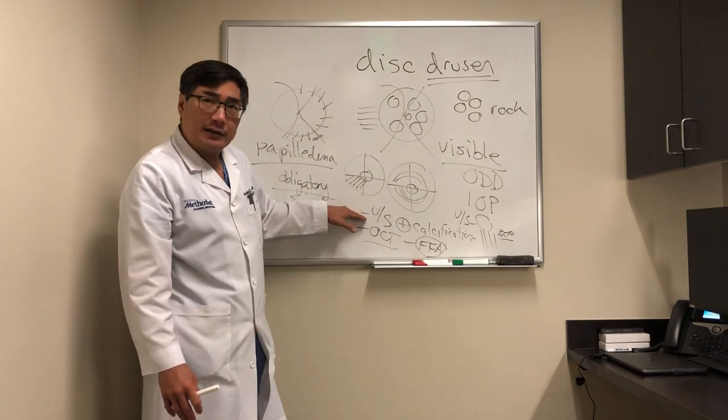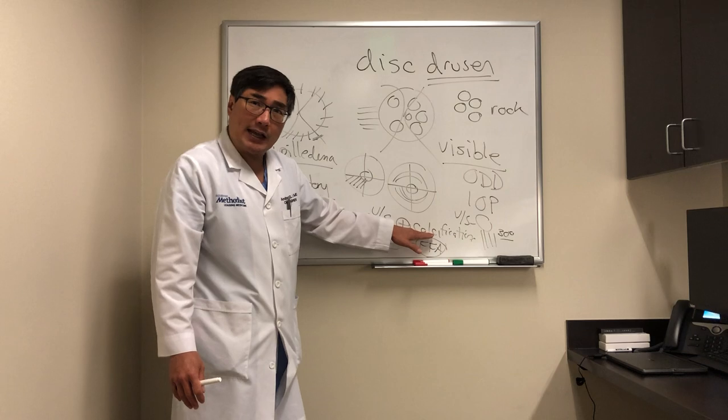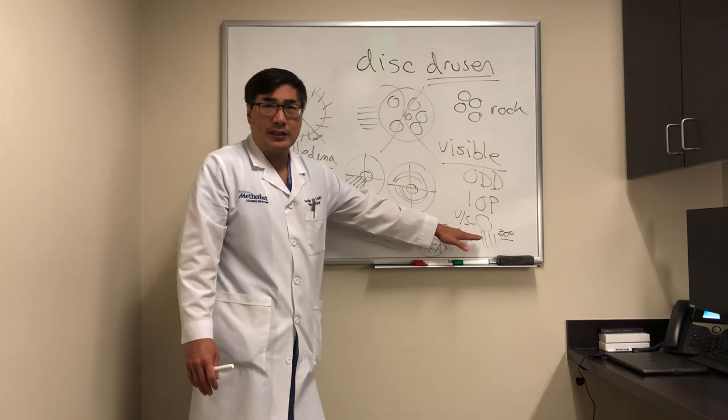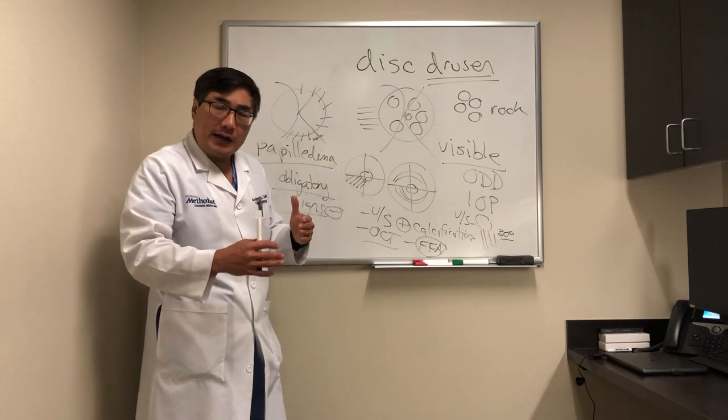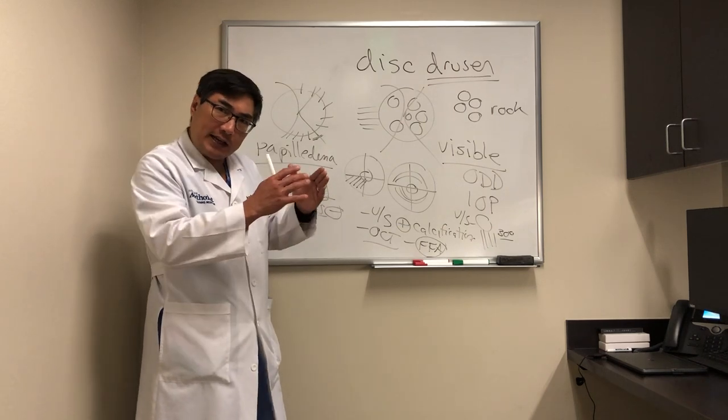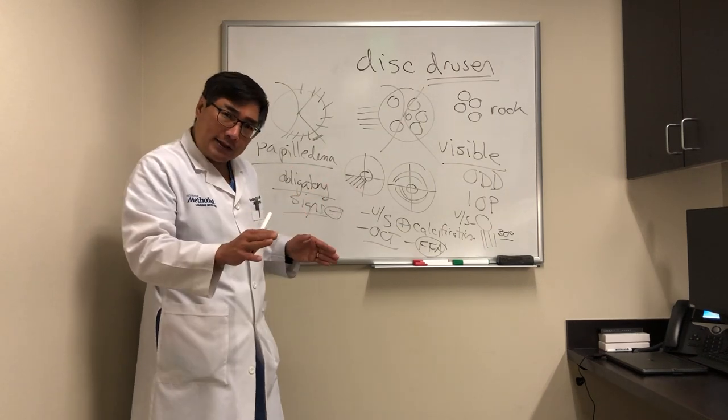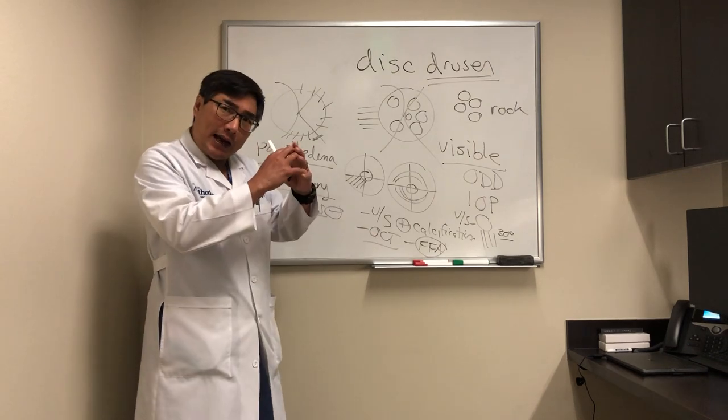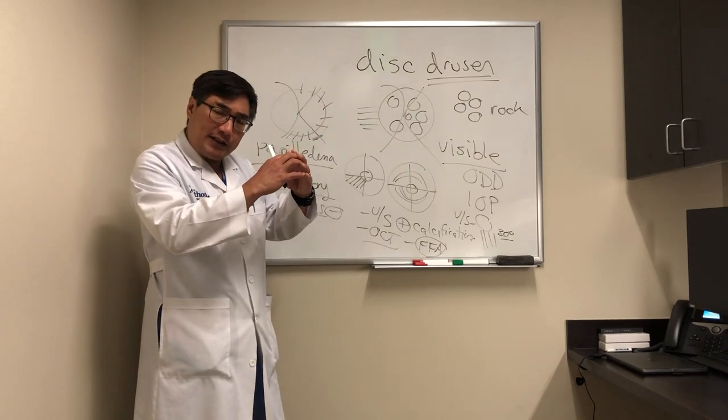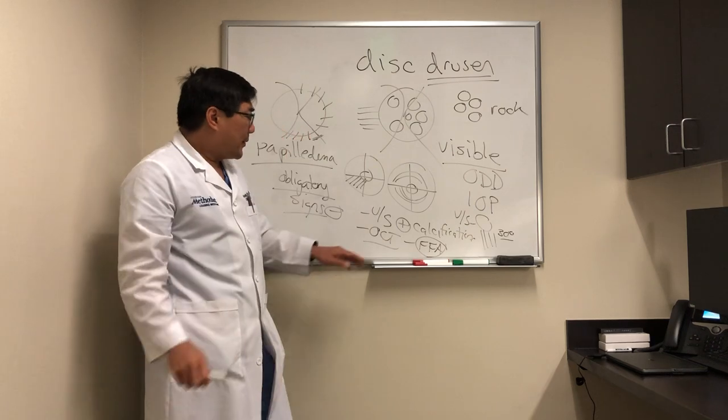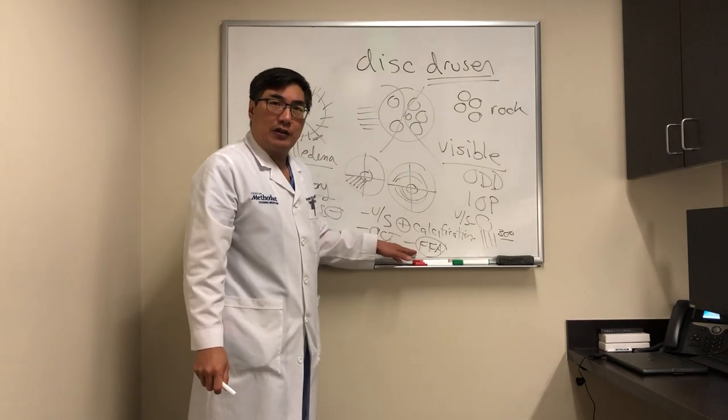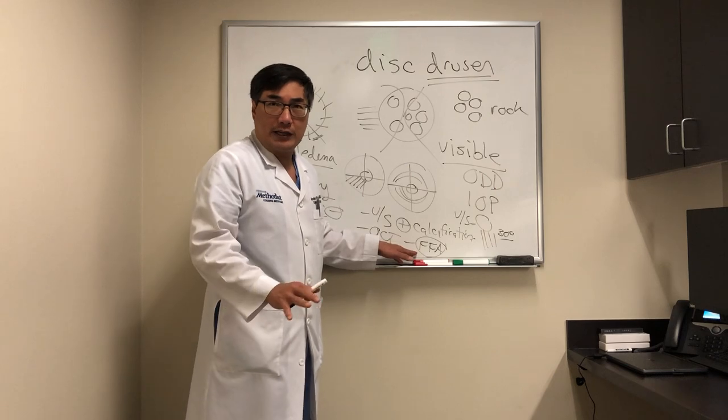In our clinic, ultrasound works best if we see the calcification, or we see the fluid in the sheath, that's probably good enough. OCT is kind of an adjunctive one, it helps establish the thickening and a baseline in a quantitative manner. And we're going to be looking for that hypo-reflective drusen with a hyper-reflective rim. And then if we're still unsure, we're going to do fluorescein angiogram to make sure there's no leakage.